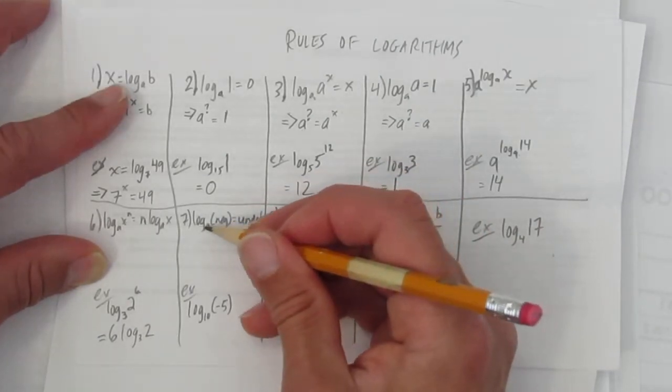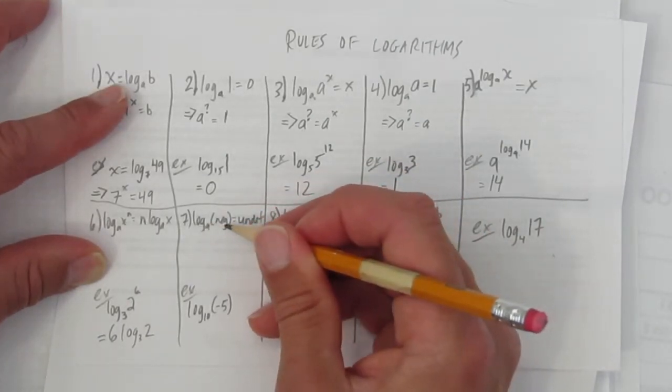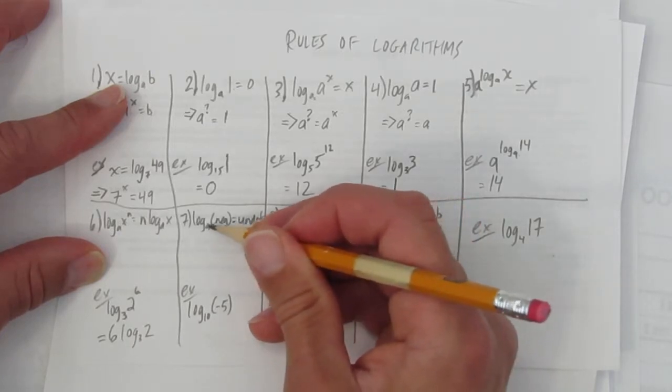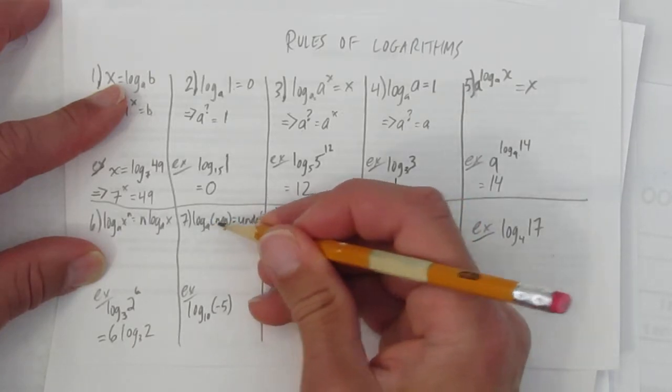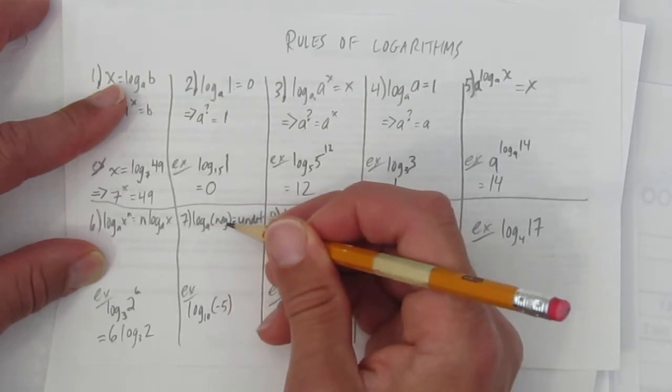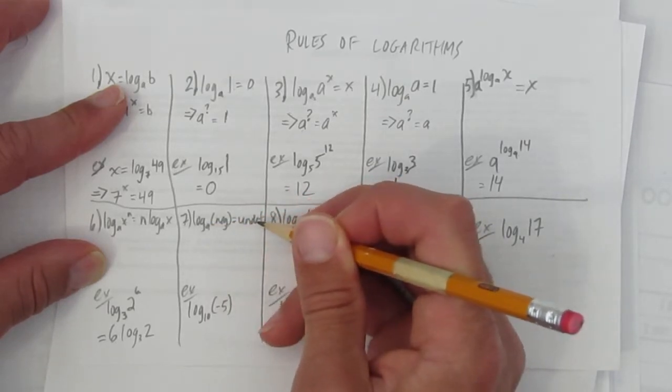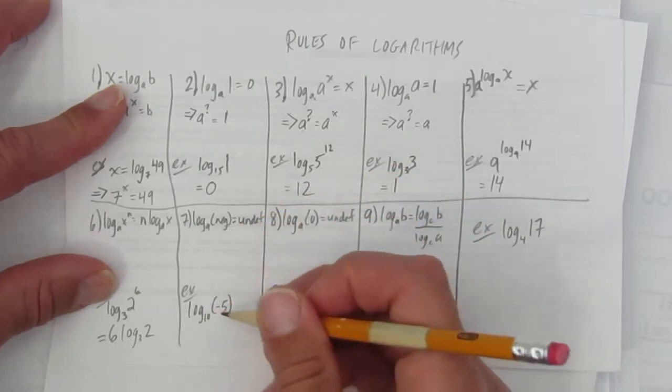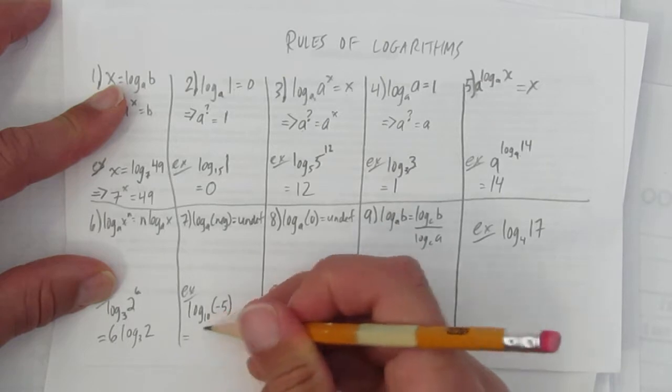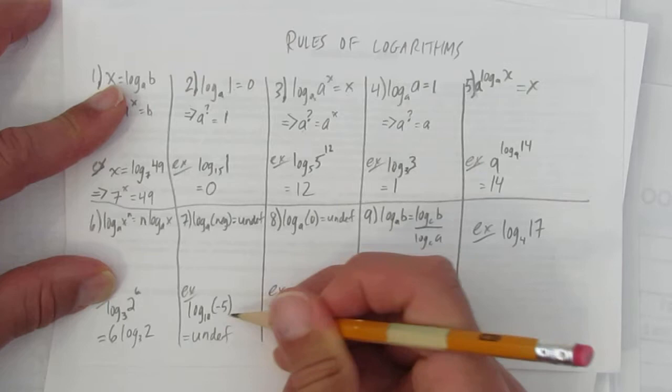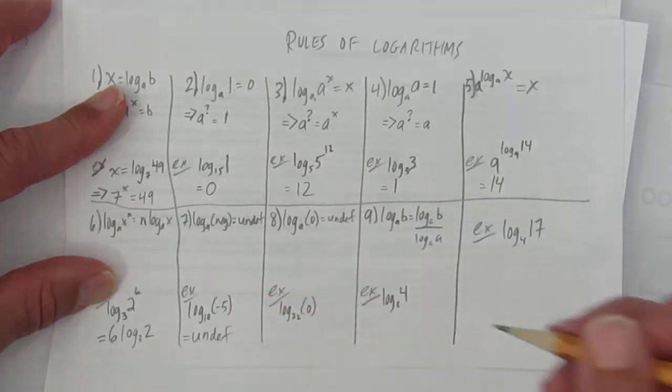For rule number 7, it says log of any base a of any negative number is undefined. That's because the logarithm parent functions, log base 2, log base 3, log base 4, it doesn't matter. Any log base of a negative number, the graph won't have anything for negative numbers. It's undefined. So if I ever give you, and I like to give it on tests, the log of some base of a negative number, the answer is undefined. You can't have log of a negative number.